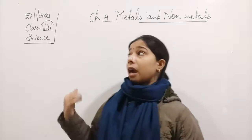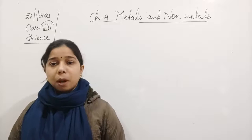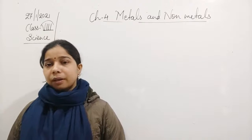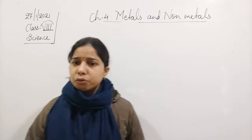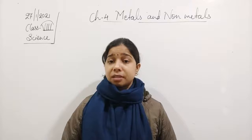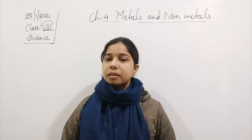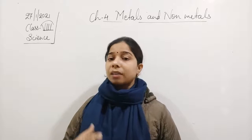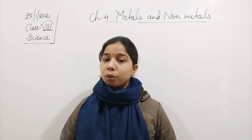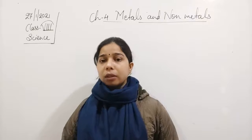We have also understood the physical and chemical properties of metals and their uses. On the basis of their properties, we decide where to use these metals. We have seen the uses of iron, copper, aluminium, mercury, gold, silver, nickel, and chromium.